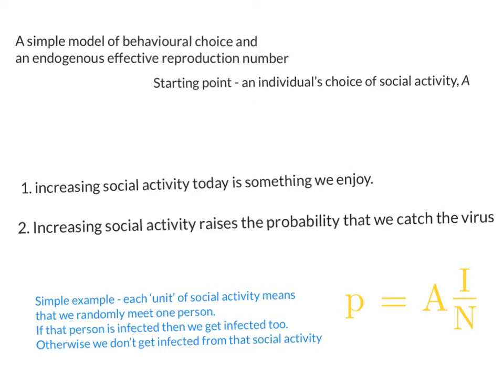So what does this mean? For an individual in a pandemic, they like engaging in social activity — it's something they enjoy. But because it increases the risk of catching the virus, that's going to moderate their level of social activity. Notice that that risk increases with the number of infected people as a proportion of the population. So as I/N rises, you're going to have a bigger cost of social activity — each unit has a bigger effect on the probability of becoming infected. So there's a trade-off: we like social activity, but the more we do, the more risk we face, and that risk depends on I divided by N.